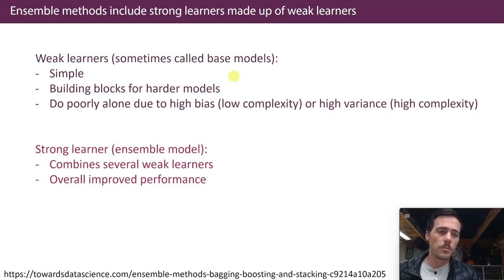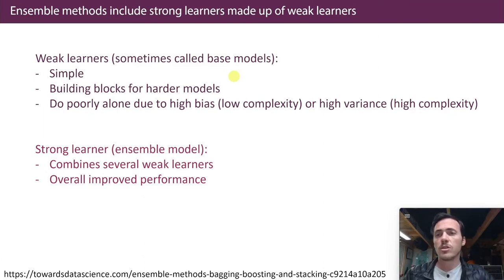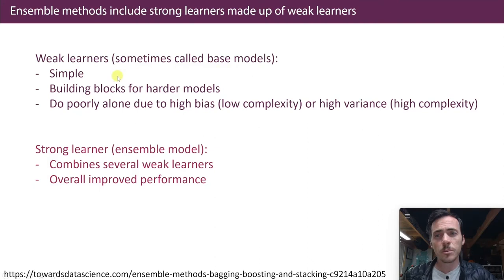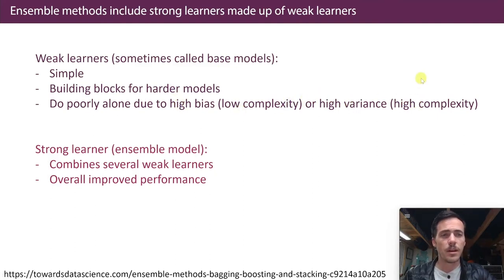The ensembling method takes advantage of this random forest approach: take a bunch of weak learners — sometimes called base models — and combine them together to make a strong learner. These base models are typically simple building blocks. Alone, they wouldn't do well because they have high bias and low complexity, or high variance meaning high complexity. To make a strong learner out of these, you combine together different weak learners to get an overall improvement in performance.